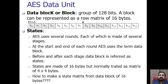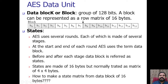A data block is a group of 128 bits. A block can be represented as a row matrix of 16 bytes. The first coordinate B0 contains 1 byte value, and coordinates B1 through B15 each also contain 1 byte value. Since each coordinate contains 8 bits and there are 16 coordinates — 16 times 8 bits — we get 128 bits total. In other words, a group of 128 bits is used to represent the data block.